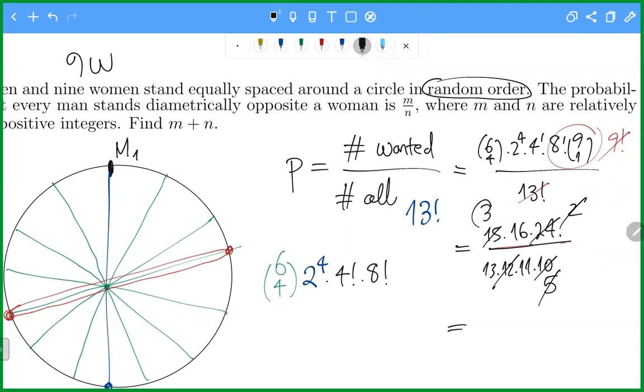So the numerator is six times three times 16, which is 48. And the denominator is 13 times 11, 143.